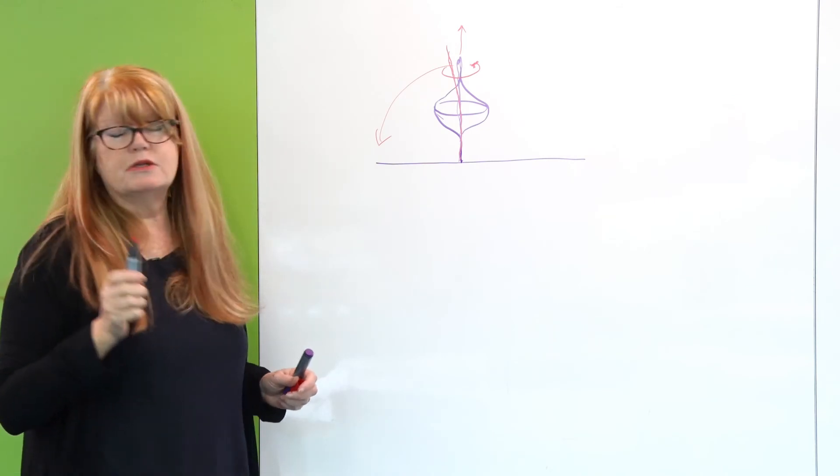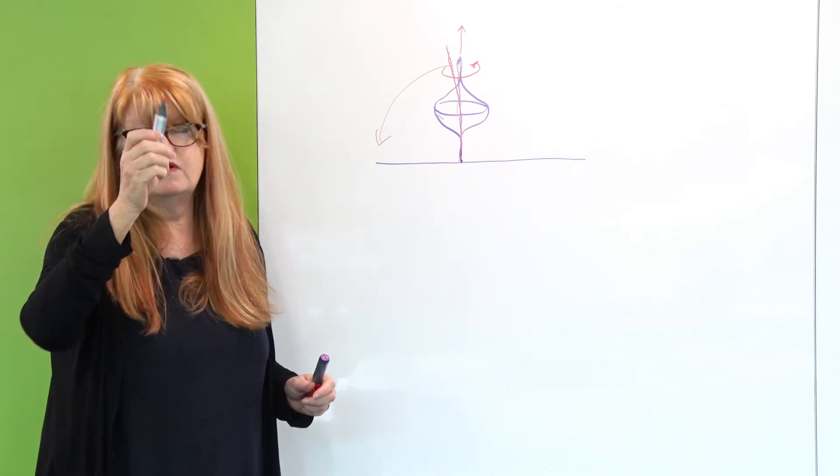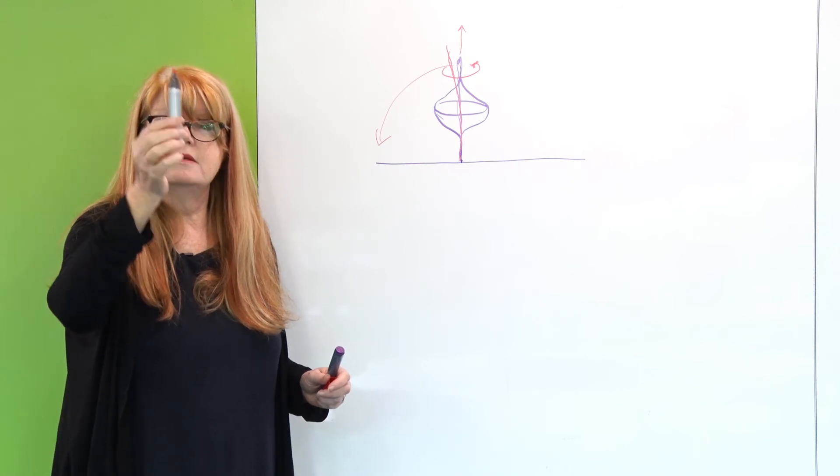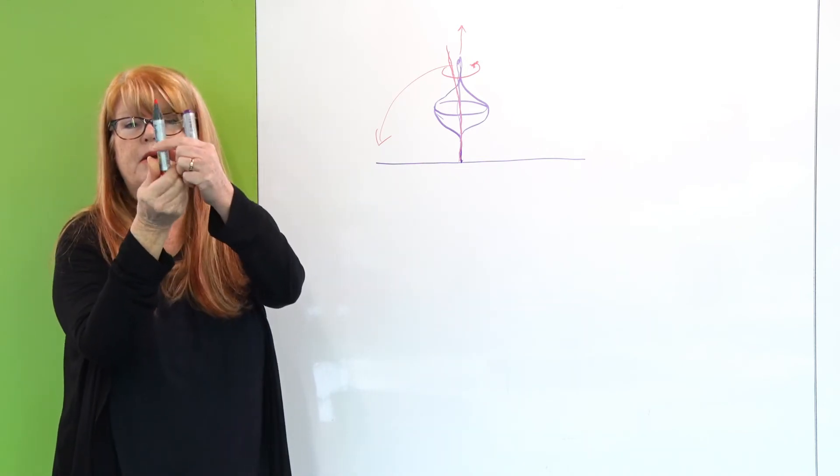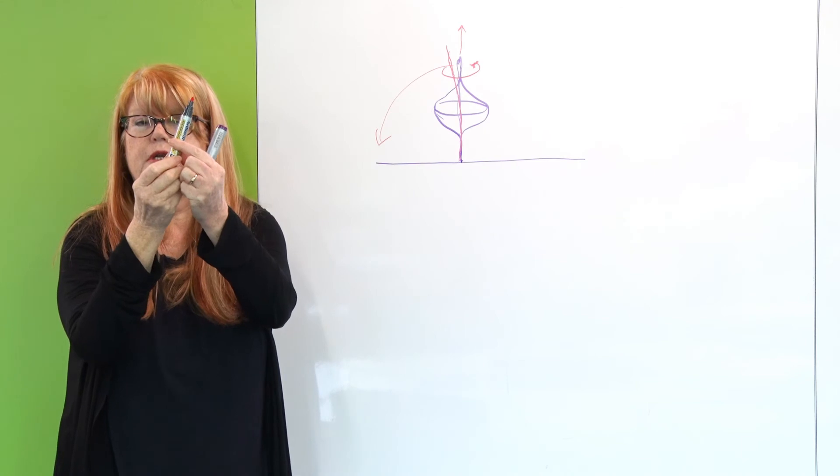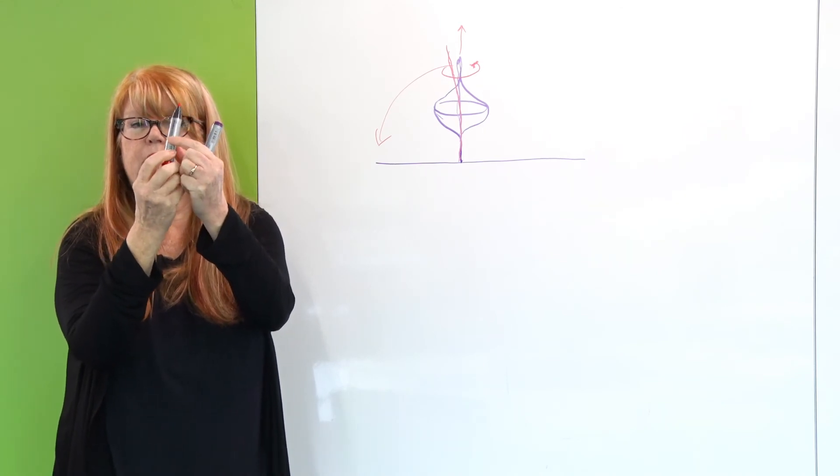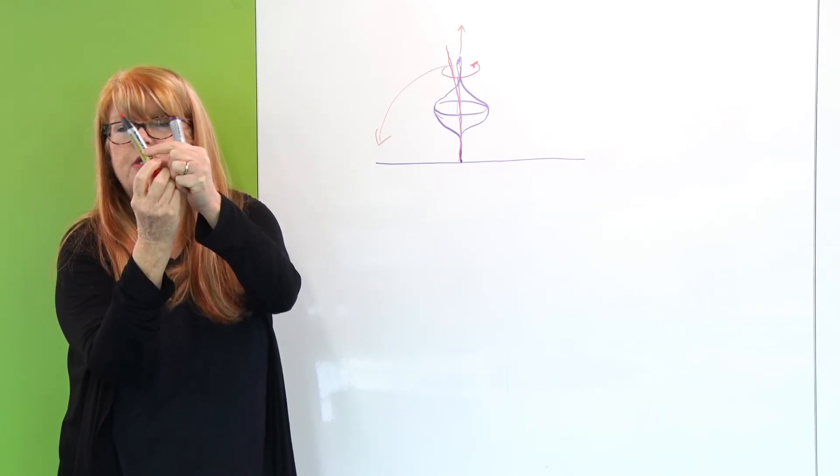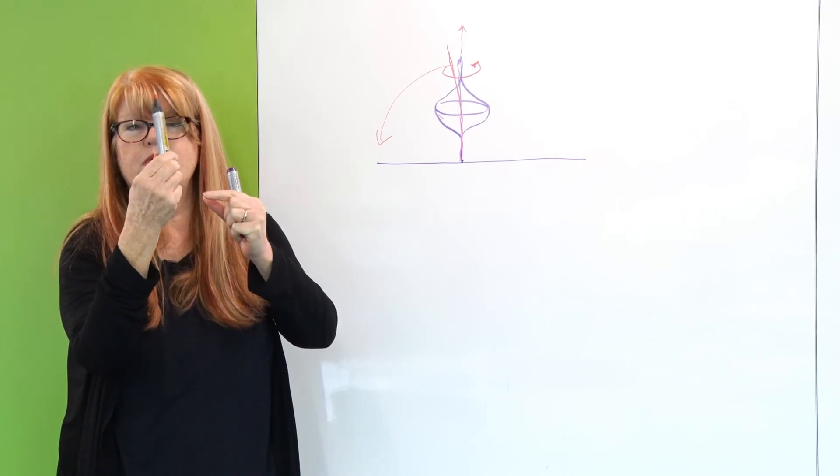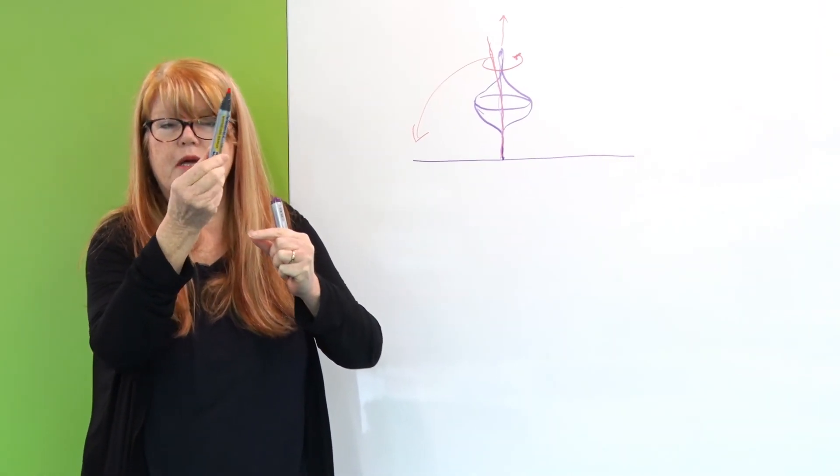What happens to the top if it's a little bit off the vertical? It precesses. So if it's spinning around this direction and it's tilted a little bit, it spins around that direction and then that direction itself slowly moves around like that.